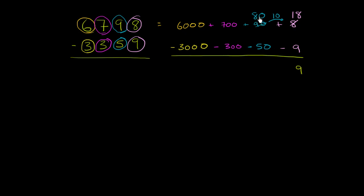I have 80, not 90 now. I have 80 minus 50, which is 30. And these are all positive. So this is plus 9, this is a positive 30. 80 minus 50 is 30. I have 700 minus 300, which is 400. And I have 6,000 minus 3,000, which is 3,000.